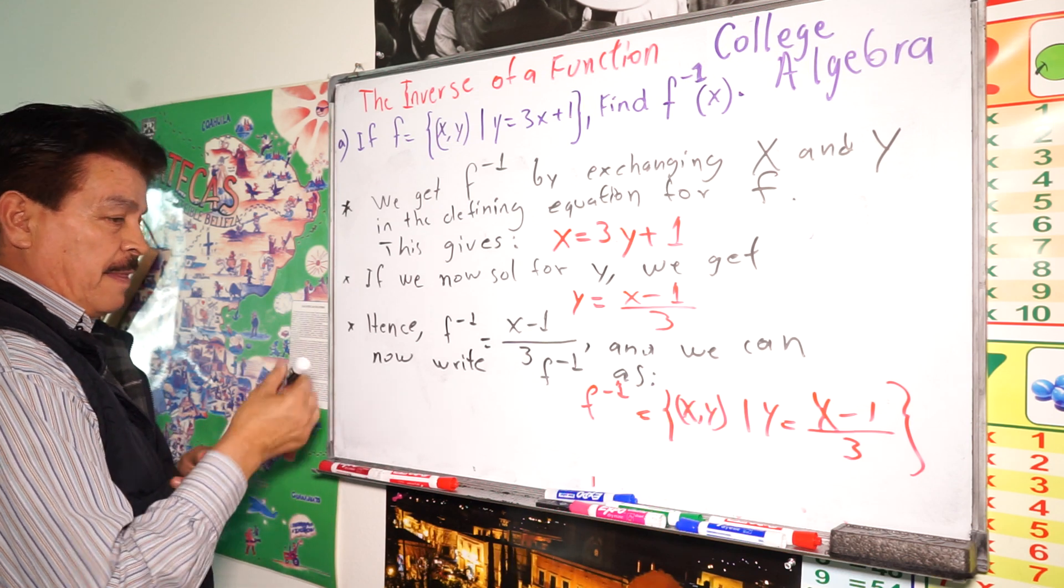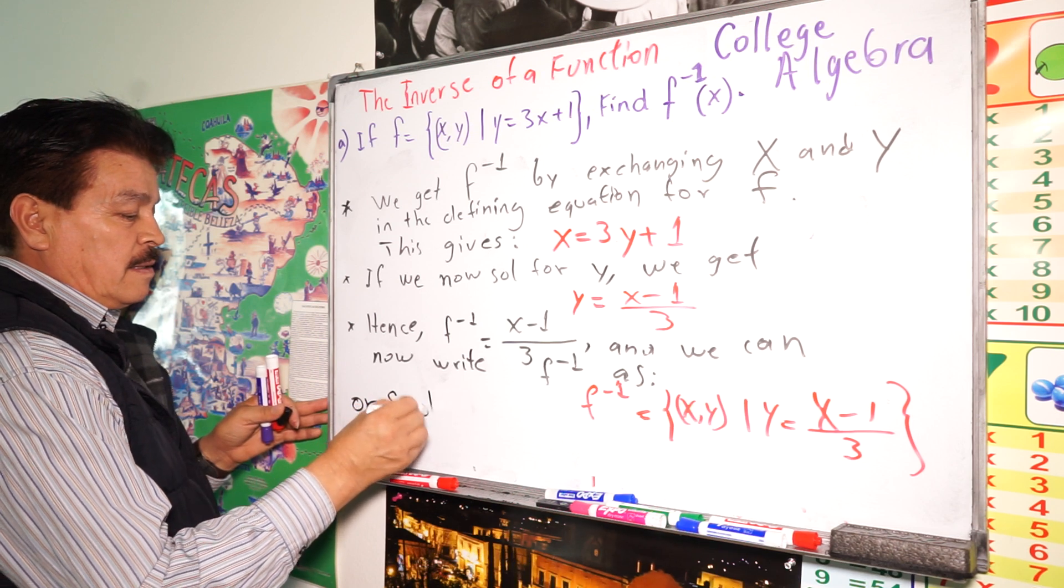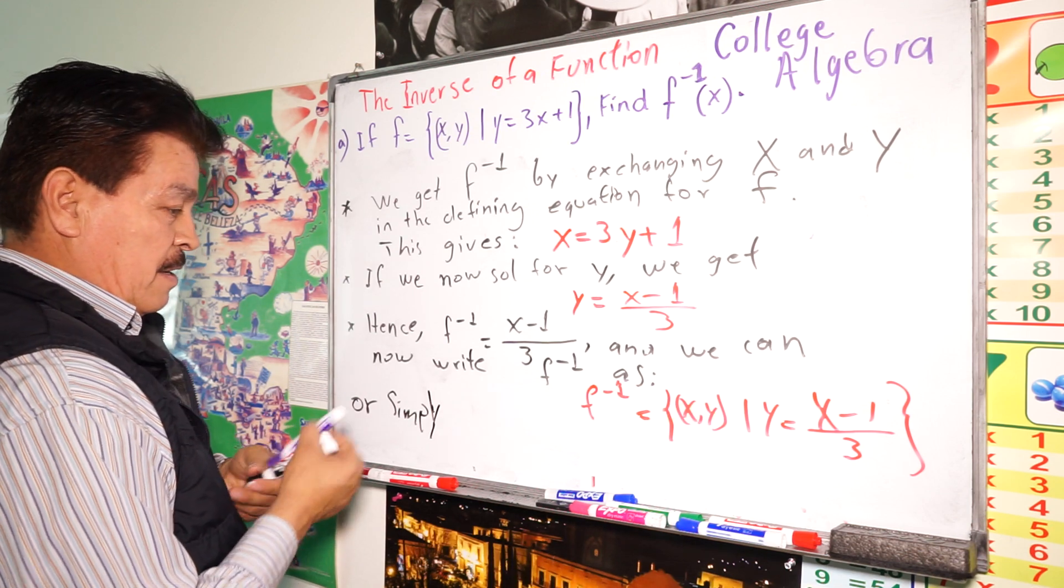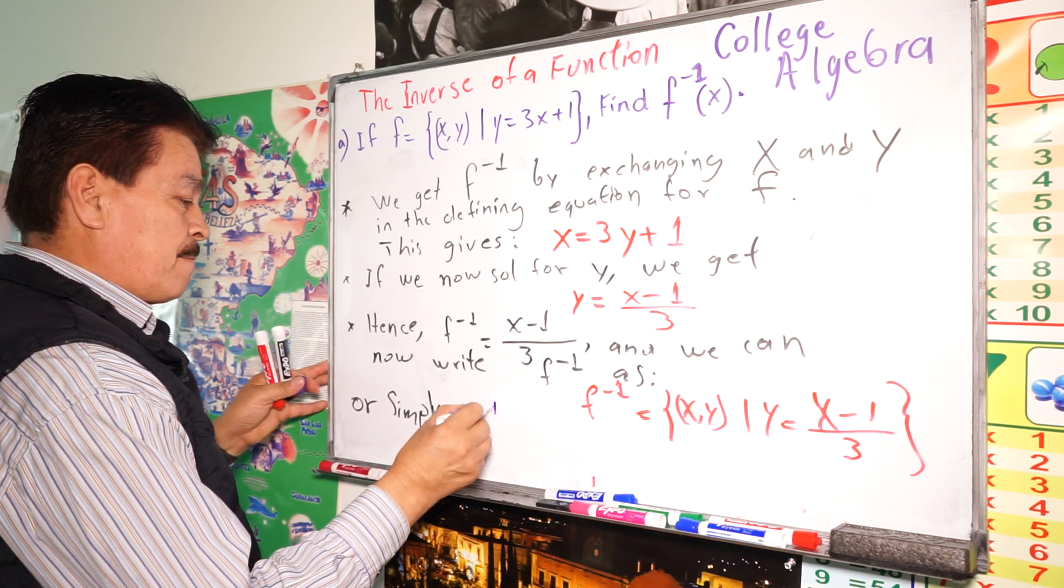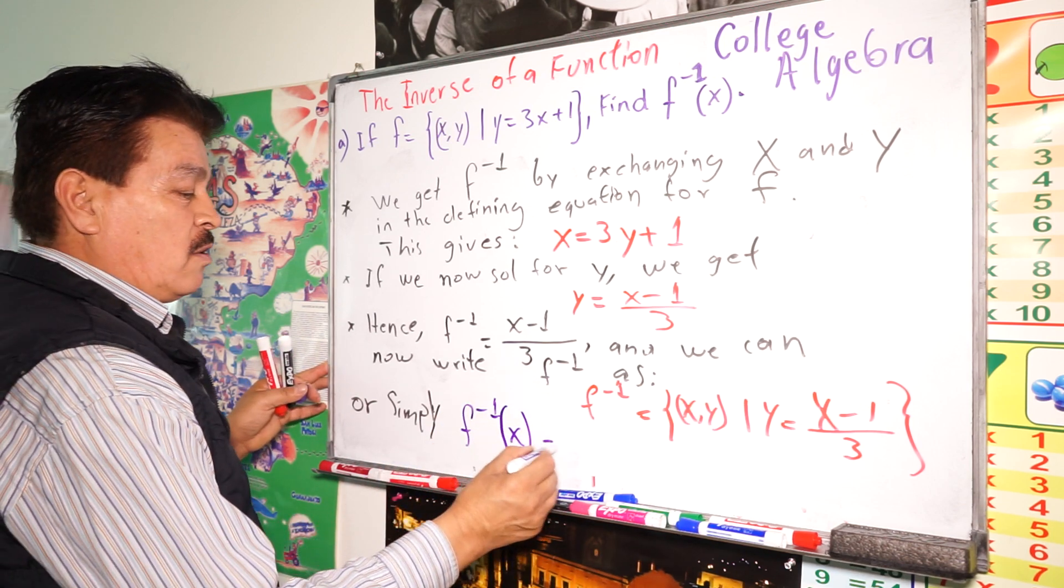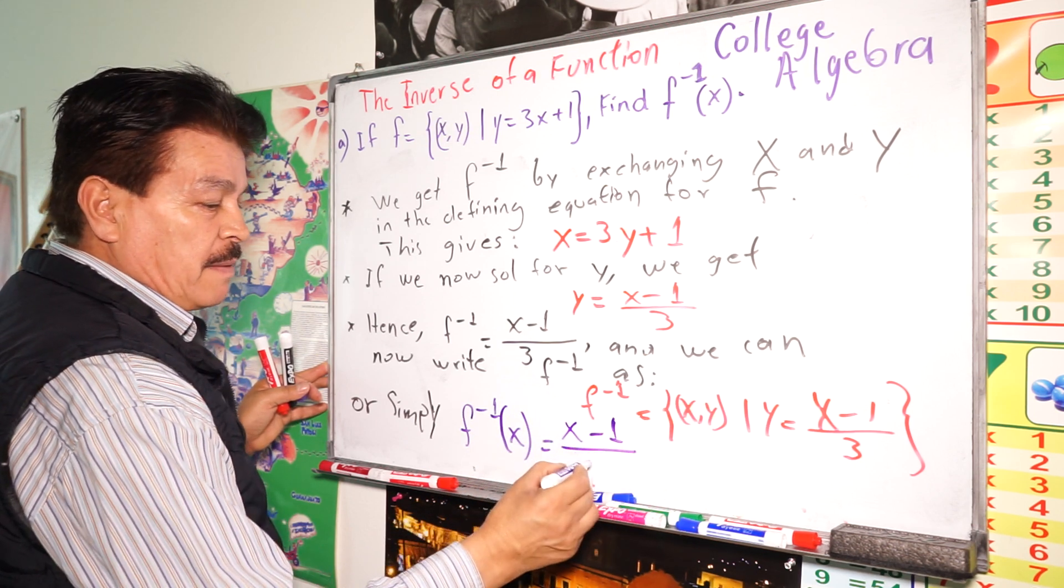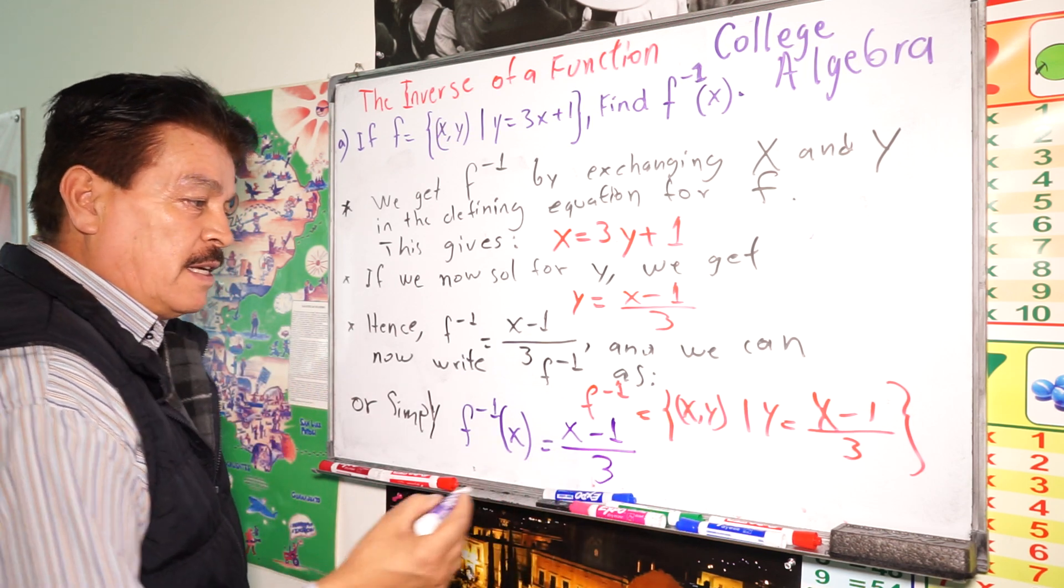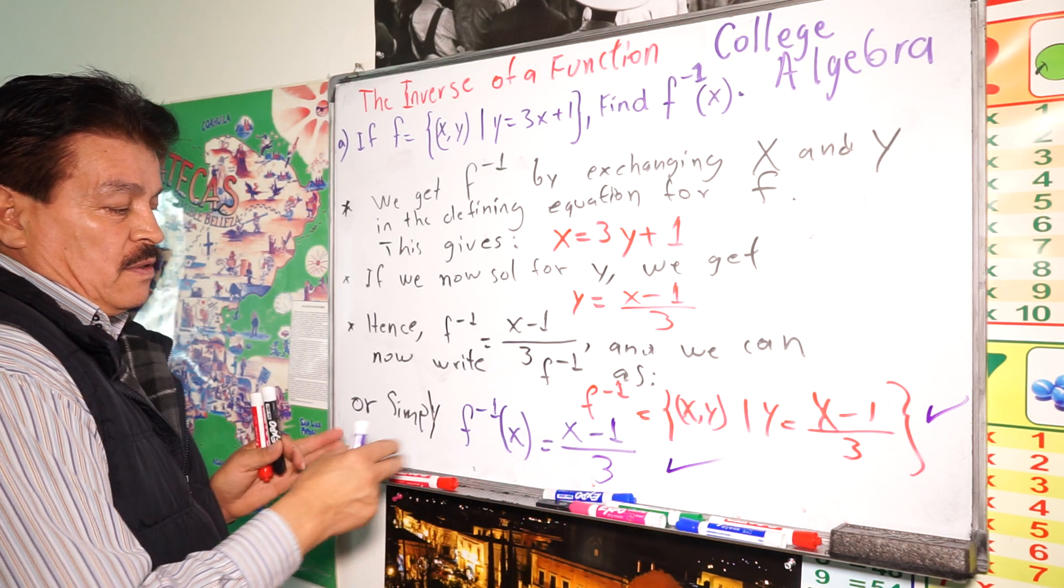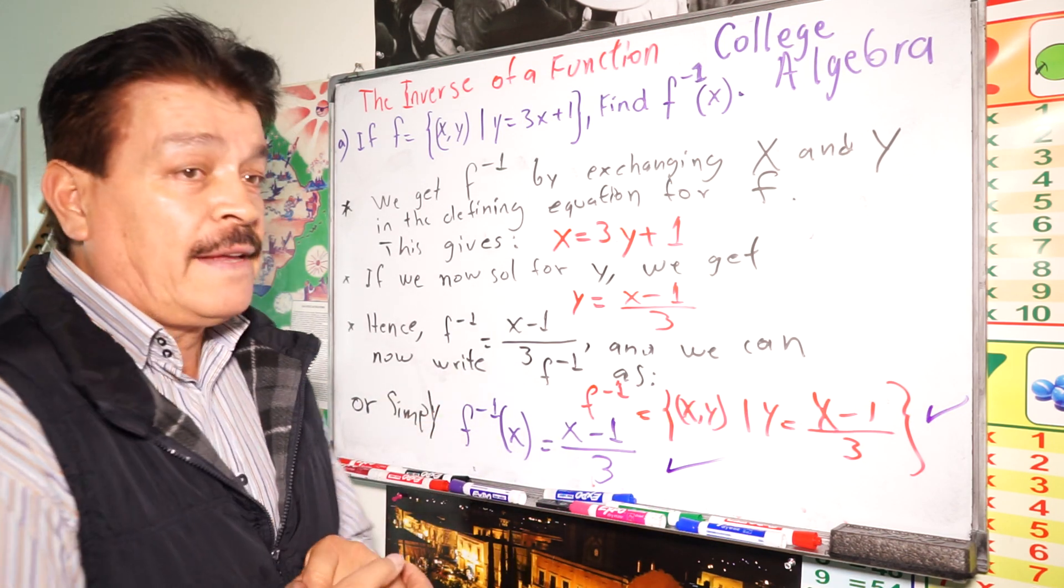Or simply f inverse of x equals x minus 1 divided by 3, okay? You have the solution here, see? Either one is fine, so it is the same thing, okay? Thank you so much.